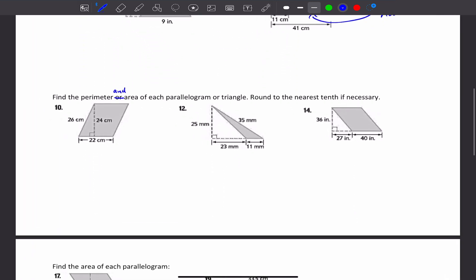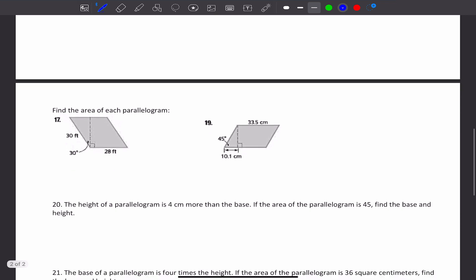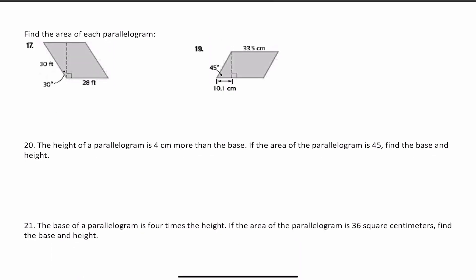Note: it says find the perimeter or area on the homework, but you should do both — that was a typo. So find the perimeter and area of each parallelogram or triangle, rounding to the nearest tenth if necessary. This is take number 2 on number 20 because I saw a mistake I made on the original, so I'm going to redo this problem and re-upload. Let's go ahead and do number 20.